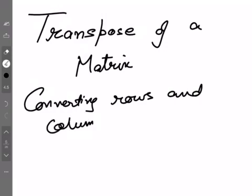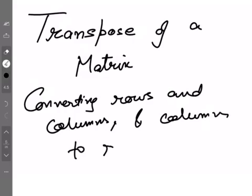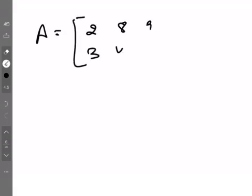Converting rows to columns and vice versa, means columns to rows. So if I have a matrix which is 2, 8, 9, 3, 4, 6 - this is a 2 by 3 matrix - so A transpose will be a 3 by 2 matrix.